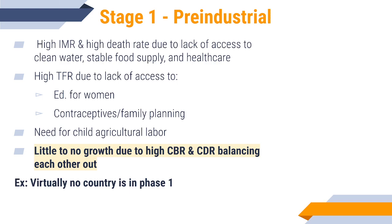Stage one is the pre-industrial stage. Here we have high birth rates and high death rates due to high infant mortality and a lack of access to food, healthcare, and water. This means a high fertility rate because as more babies and children die, parents continue to have children. There's also a lack of education and economic opportunities. The general idea is that there's no growth here despite high birth and death rates balancing each other out — even with fertility rates of maybe six or seven babies born on average, not all survive. We don't expect all of them to survive; maybe two do, which is why we get a balance. Today, virtually no country is in this phase.